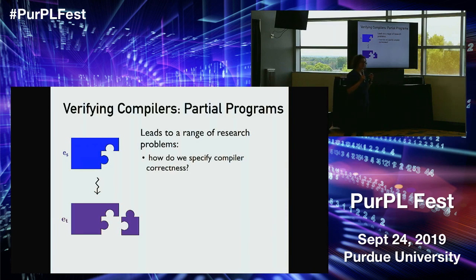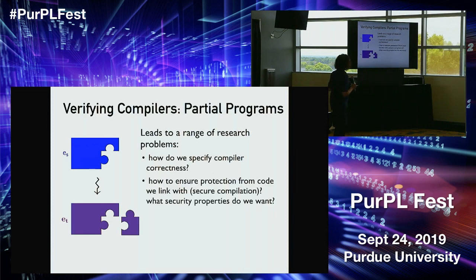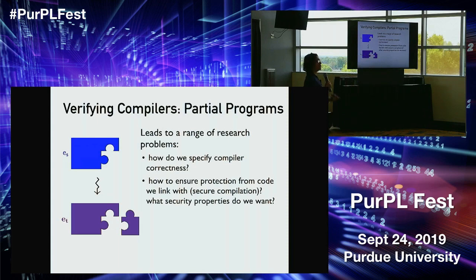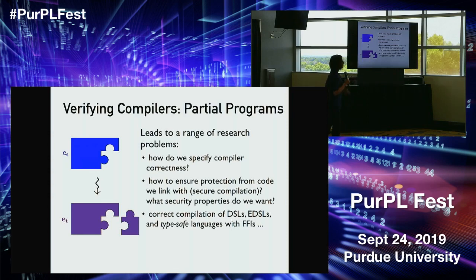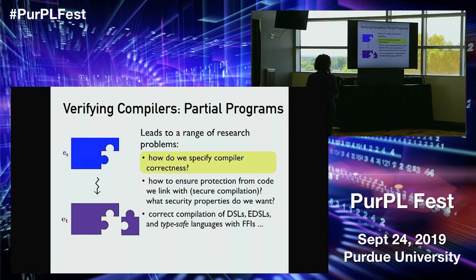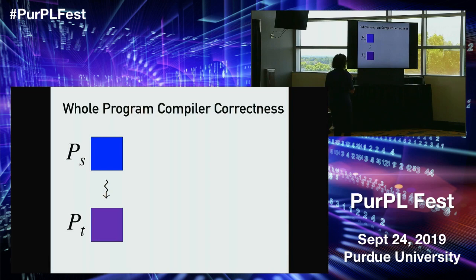This area has seen some work. I'll spend about half my talk on how we even specify compiler correctness when compiling components rather than whole programs. Then I'll go into harder challenges: how do we ensure that our compiled code is protected from something it's linked with — think of that code as an attacker — and what security properties do we want? I'll also cover verified compilation in the context of domain-specific languages and compiling type-safe languages with FFIs, as opposed to C.